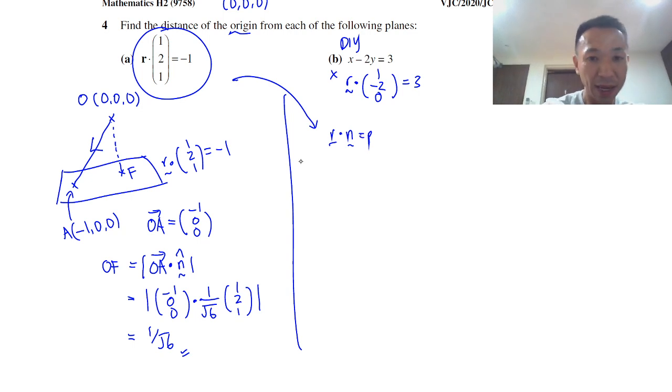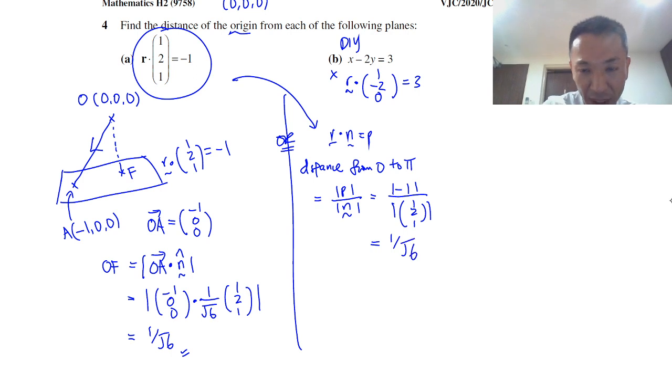Which in this case is |-1| over |(1,2,1)| which is √6. Therefore it's 1/√6. Now this is a so-called formula.